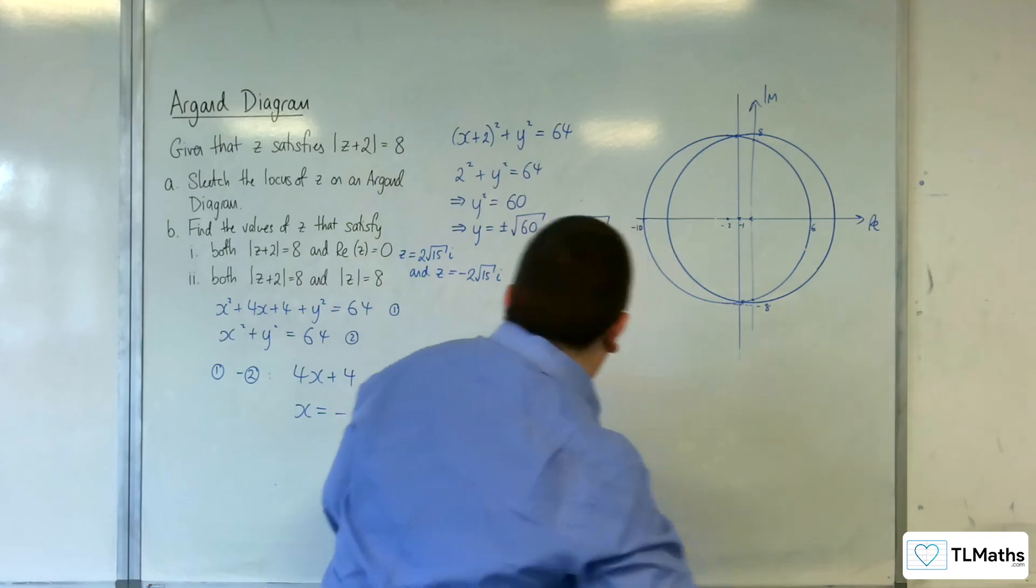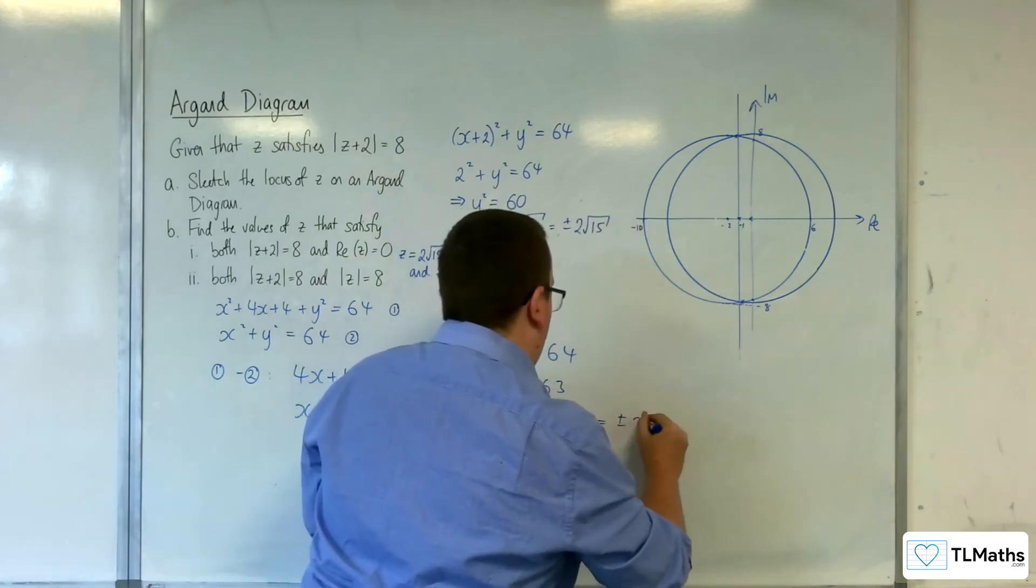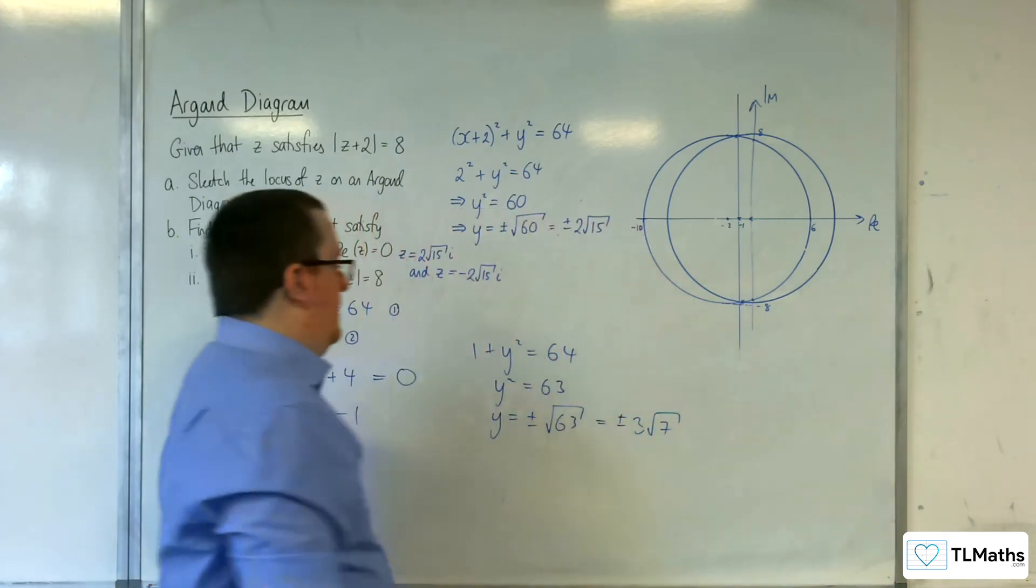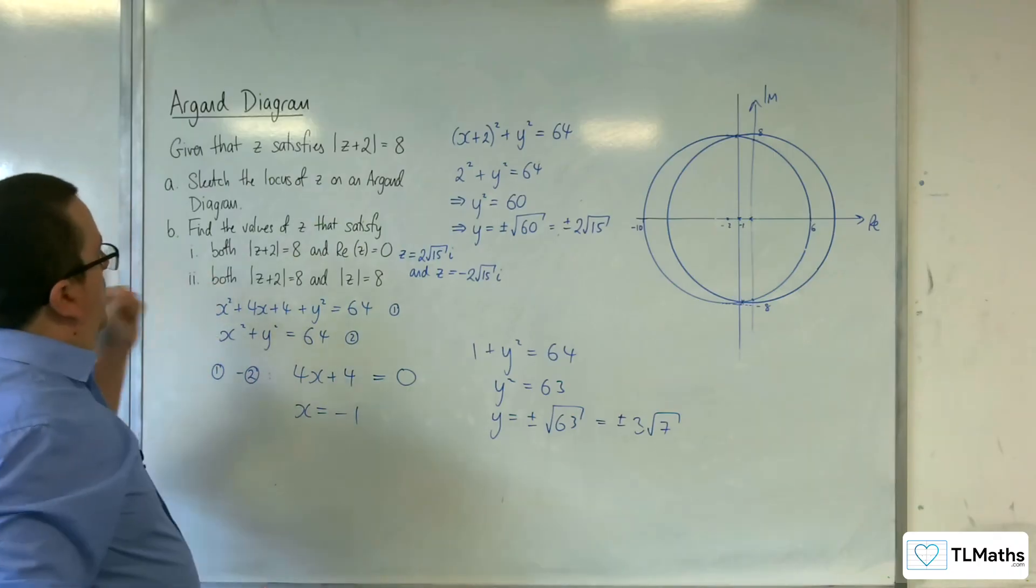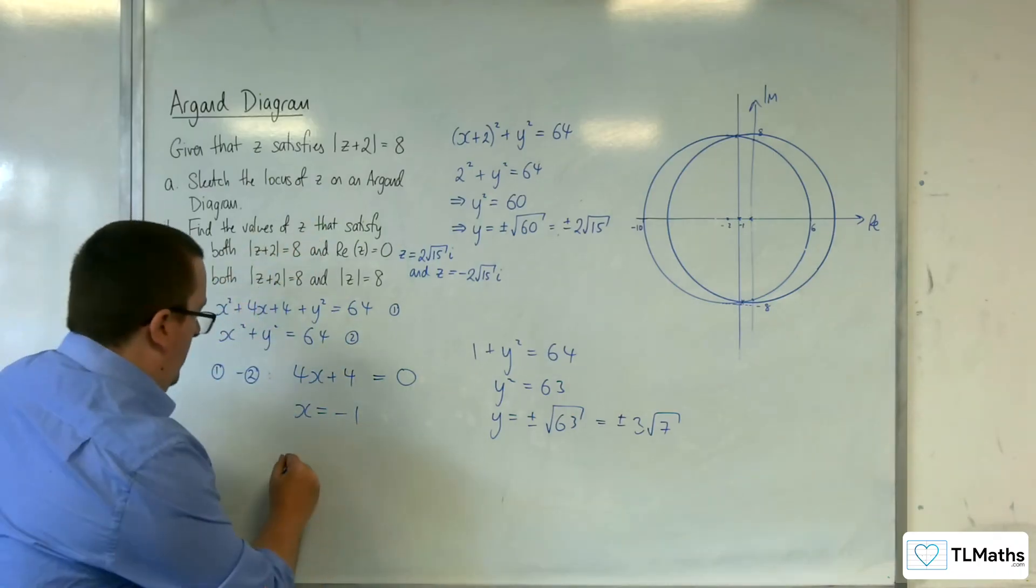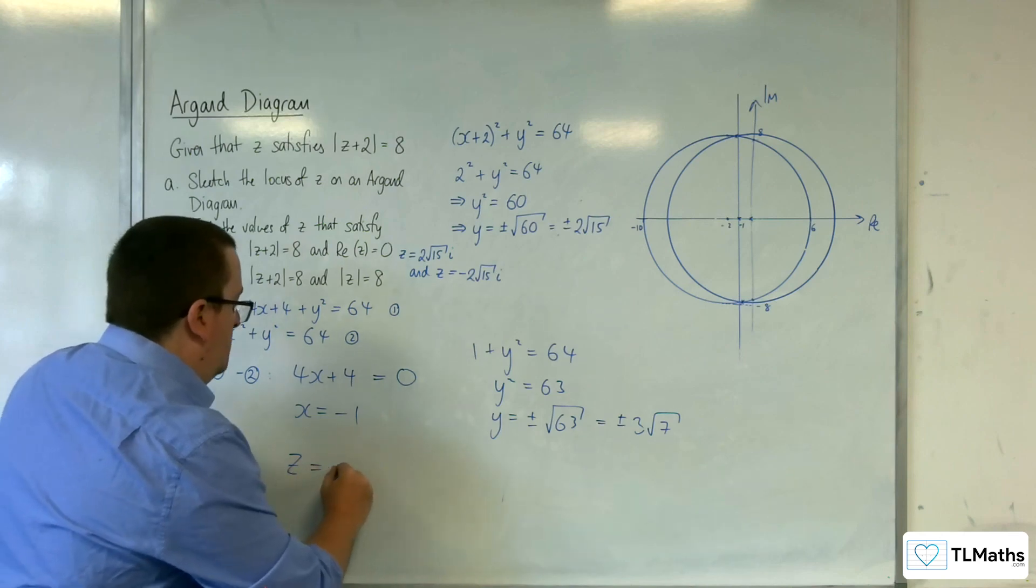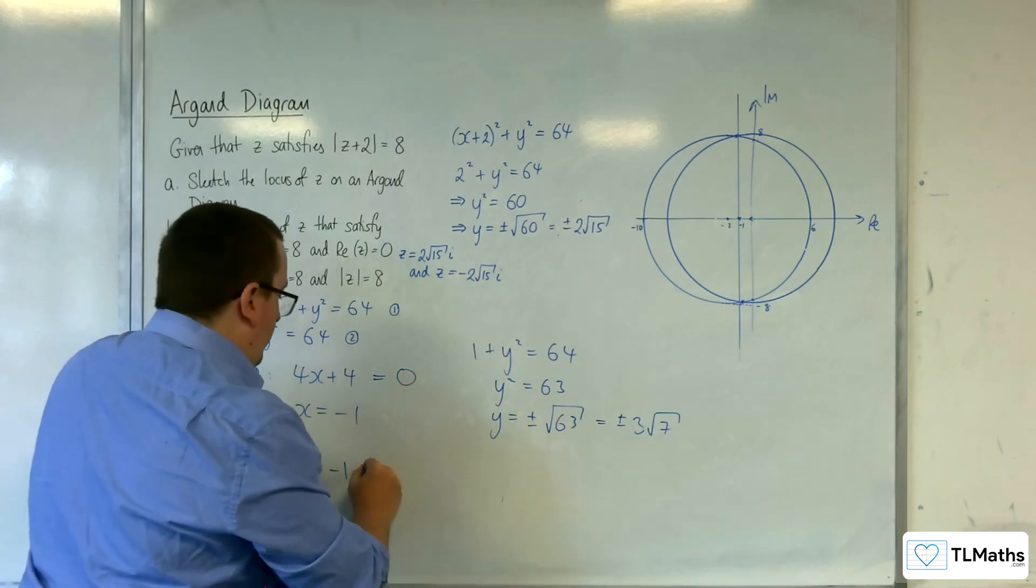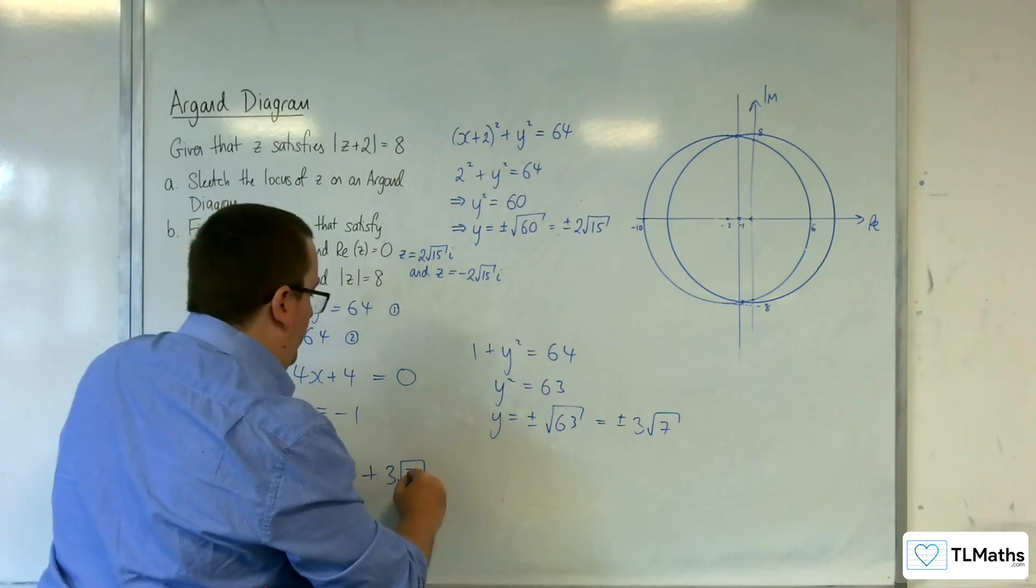So, plus or minus 3 root 7. OK. So, the values of z that satisfy both that circle and that circle are z equals minus 1 plus 3 root 7i.